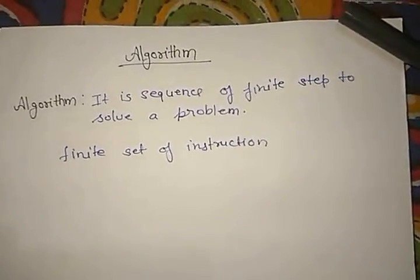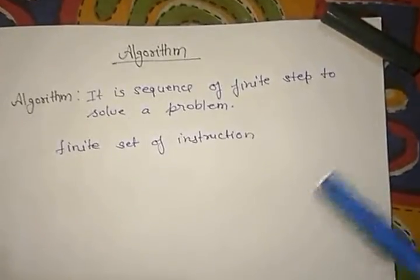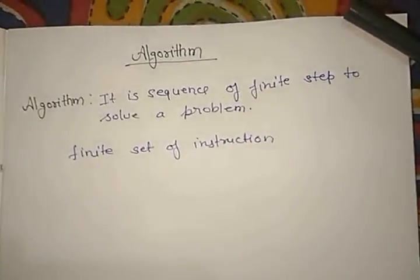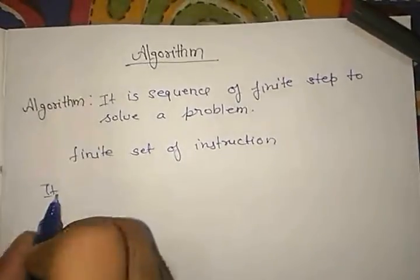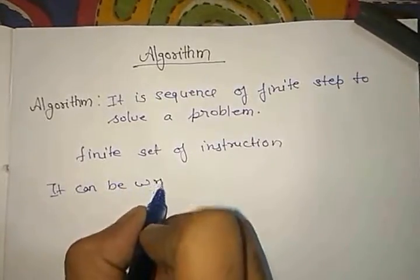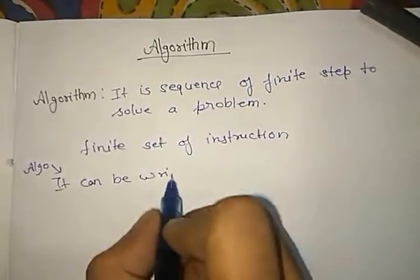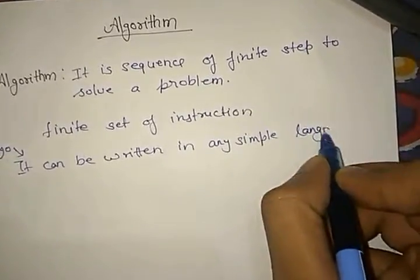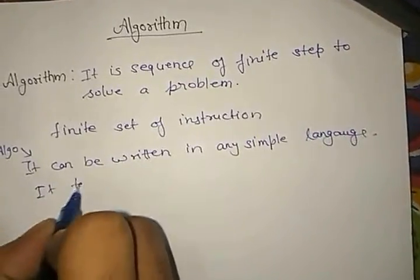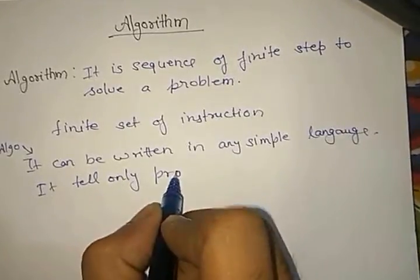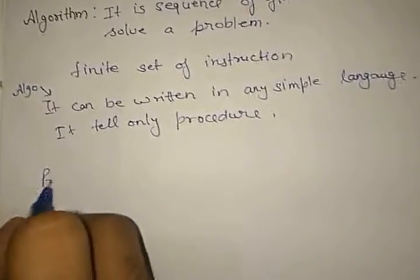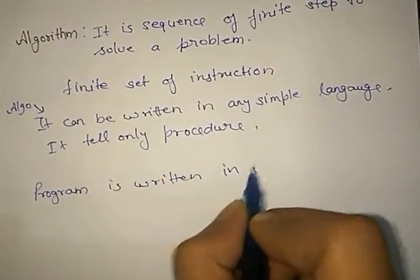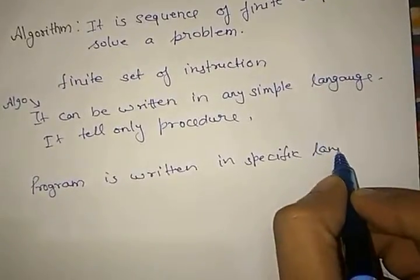Now you might ask: if an algorithm is a finite set of instructions, what is the difference between an algorithm and a program? An algorithm can be written in any simple language such as English. It does not depend on the type of language — it only describes a procedure. A program, on the other hand, is written in a specific language.